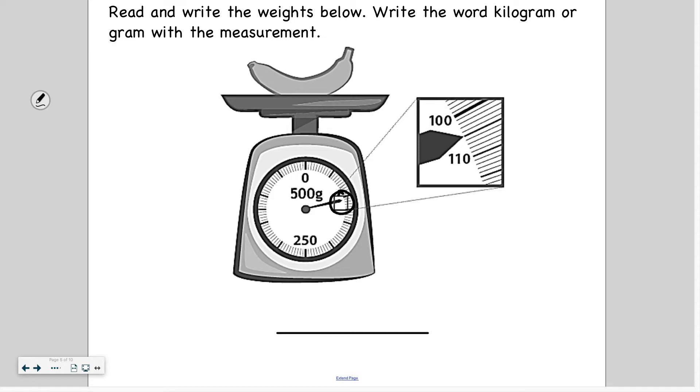But I'm going to count just to be sure because I know there's 10 lines in between 100 and 110. So 101, 102, 103, 104, 105. So it is in fact 105 and I know it's grams because I see the G right here. That stands for grams.